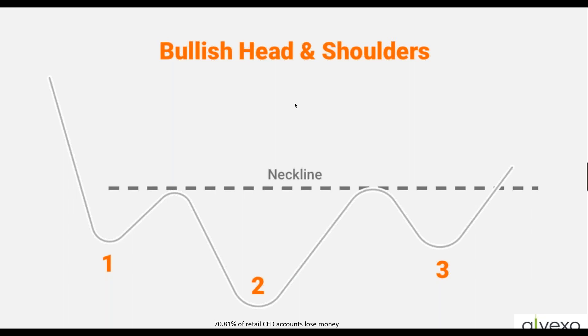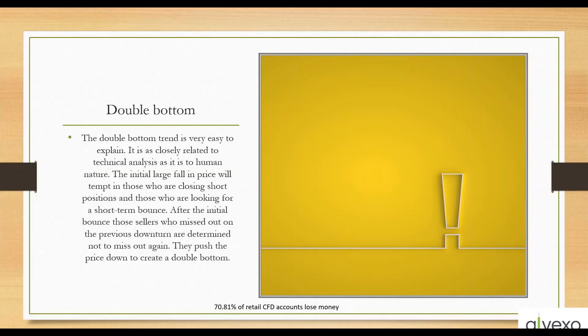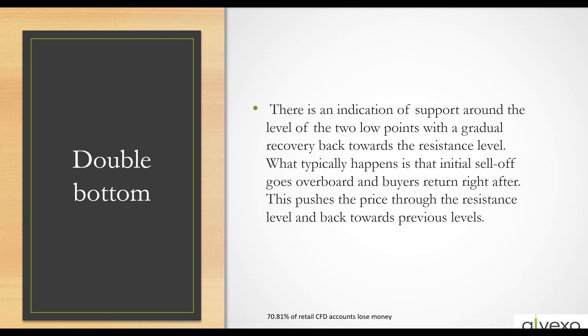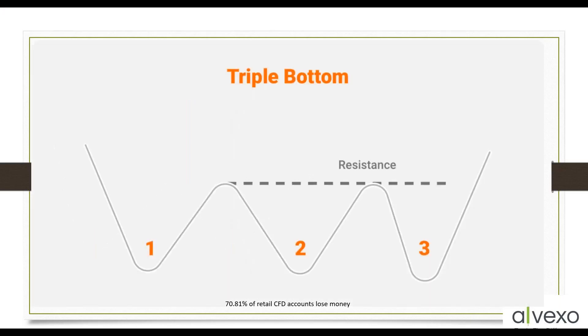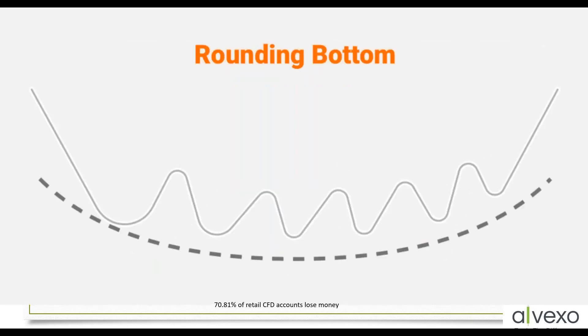The head and shoulders pattern — both upside down and right side up — forms the head and shoulders of a person with a neckline. Then there are double bottoms, double tops, triple bottoms, and triple tops. I pay no attention to any of them, because hitting the same price twice in a few minutes in short-term trading happens too often and doesn't tell you anything. Once an asset has gone through a triple bottom, then I'll start paying some attention to that line of support.